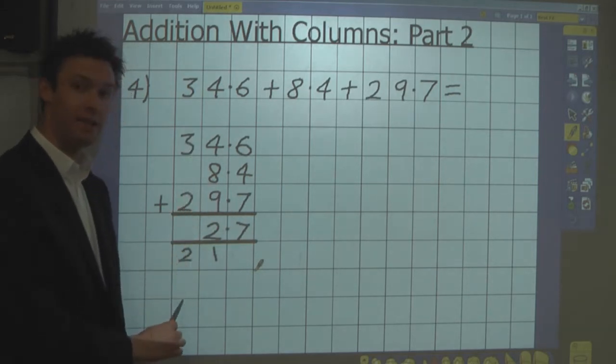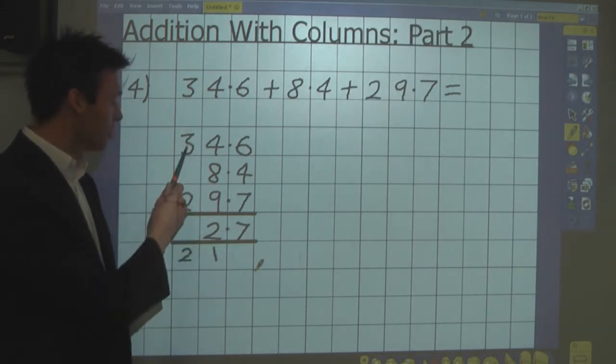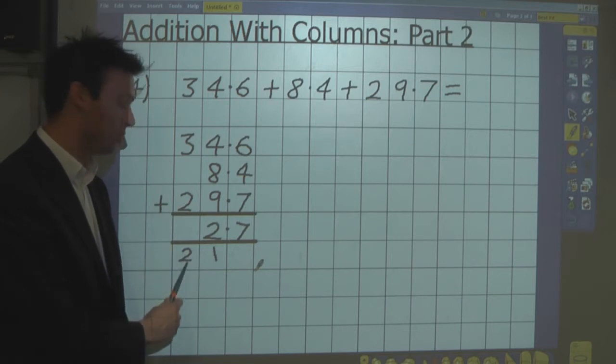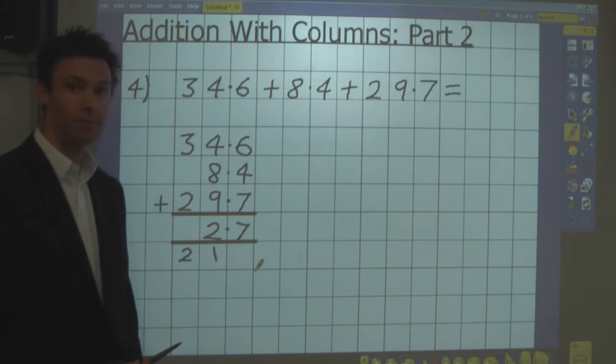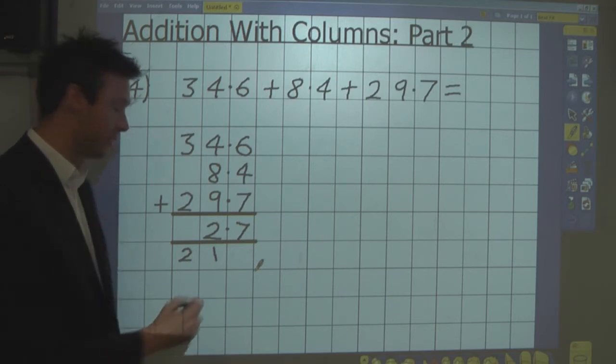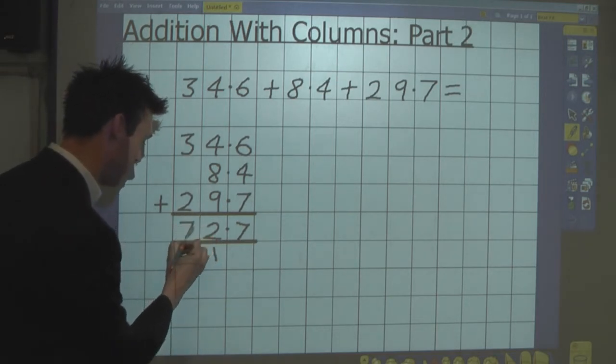Finally, I add all of the tens. And again, I'm using the language 3 tens plus 2 tens plus 2 tens. Or I could say 30 plus 20 plus 20. And the answer is 70, 7 tens.